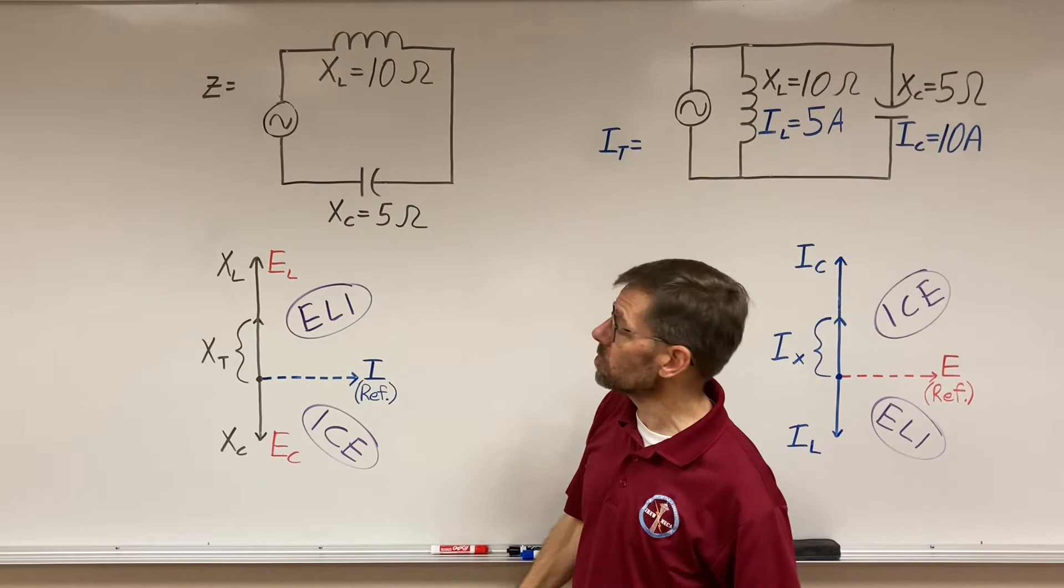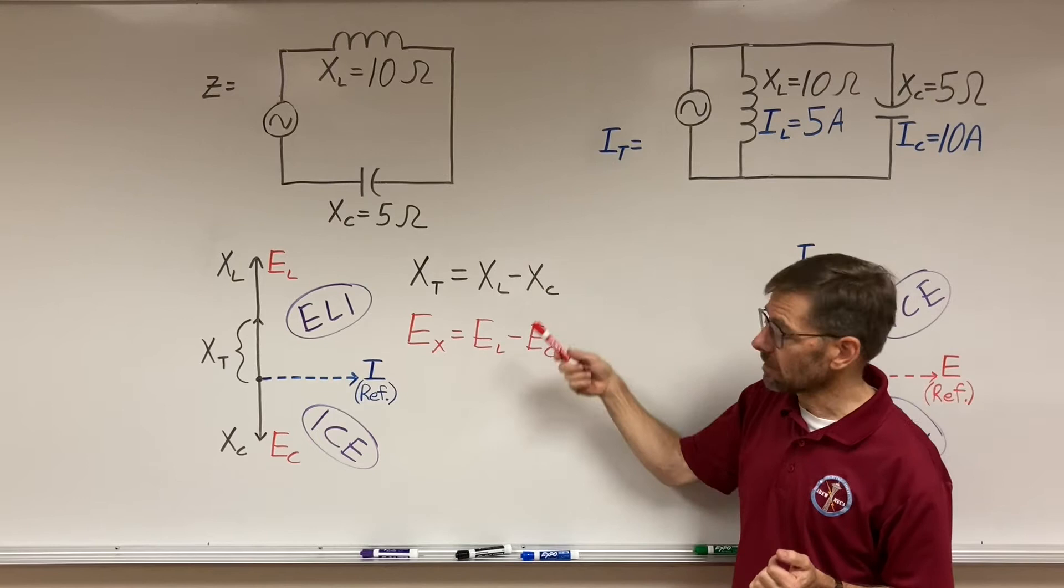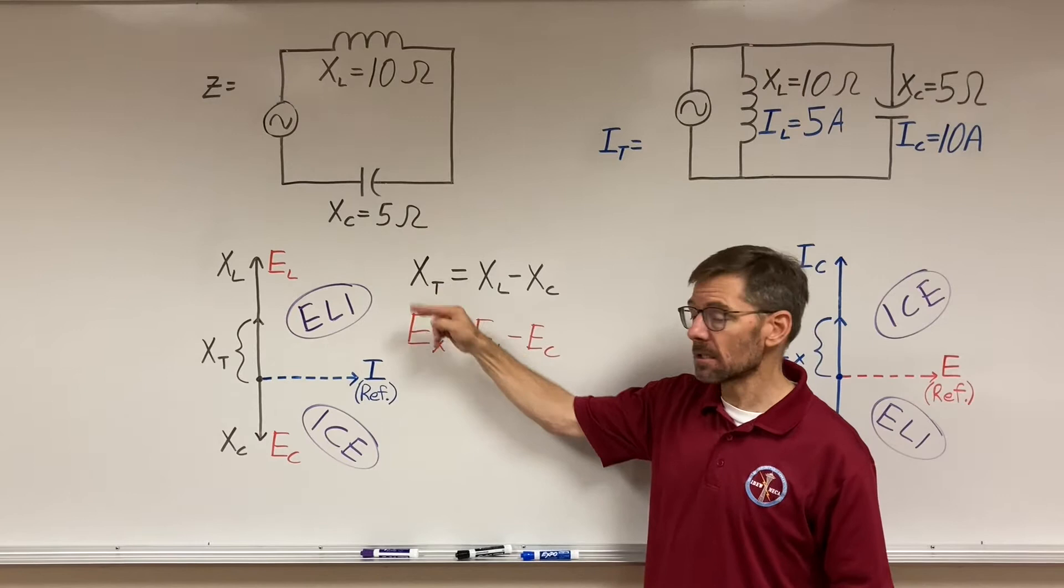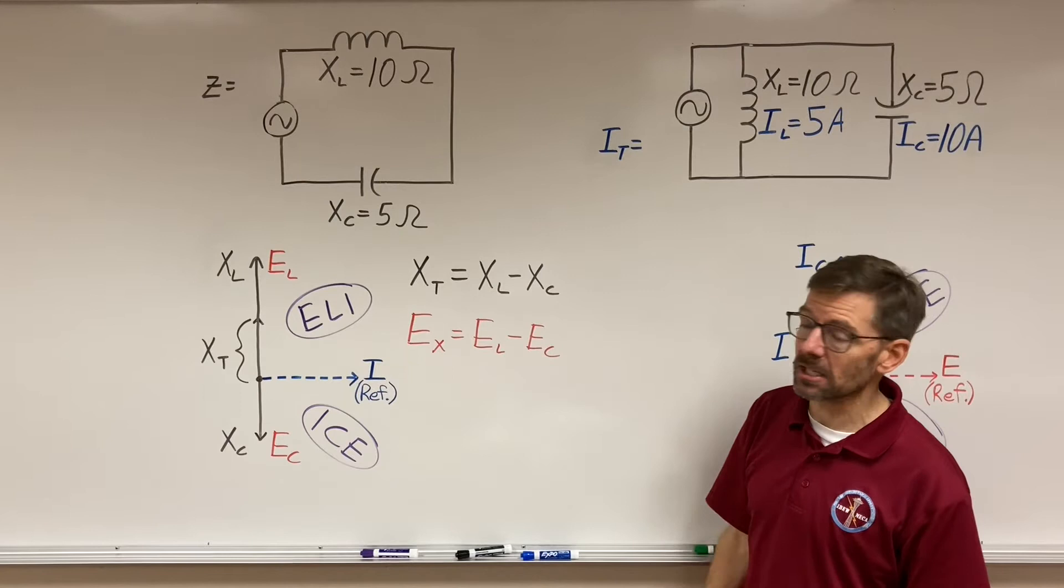So when I've got 10 ohms and 5 ohms, or voltage numbers if I wanted those too, I simply take the bigger one minus the little one. And the formula looks like this. Whether I do it with my reactances or my reactive voltages, I get my total reactance or my reactive voltage by just going the inductive voltage minus the capacitive voltage. Inductive reactance minus capacitive reactance.